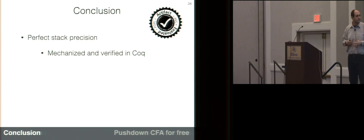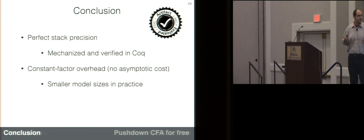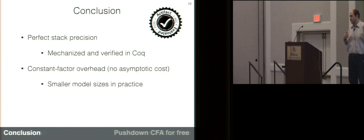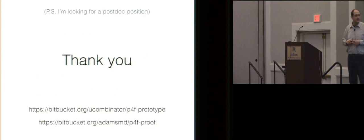In conclusion, we describe in our paper a technique for static analysis that guarantees perfect stack precision. We have a proof of the perfect precision of our analysis, mechanized and verified in Coq. Our technique guarantees only a constant factor of overhead, and we've implemented it in an existing framework written in Scala, tested against both AAC and an imprecise analysis. Across the board we saw smaller model sizes, suggesting in practice the constant factor tends to be less than one. For frameworks using store-allocated continuations, the insights of our paper can be applied for the very low cost of a trivial change to code.